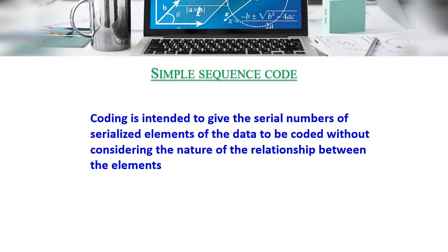Symbol sequence code: coding is intended to give a serial number to serialized elements of the data to be coded, without considering the nature of the relationship between the elements.